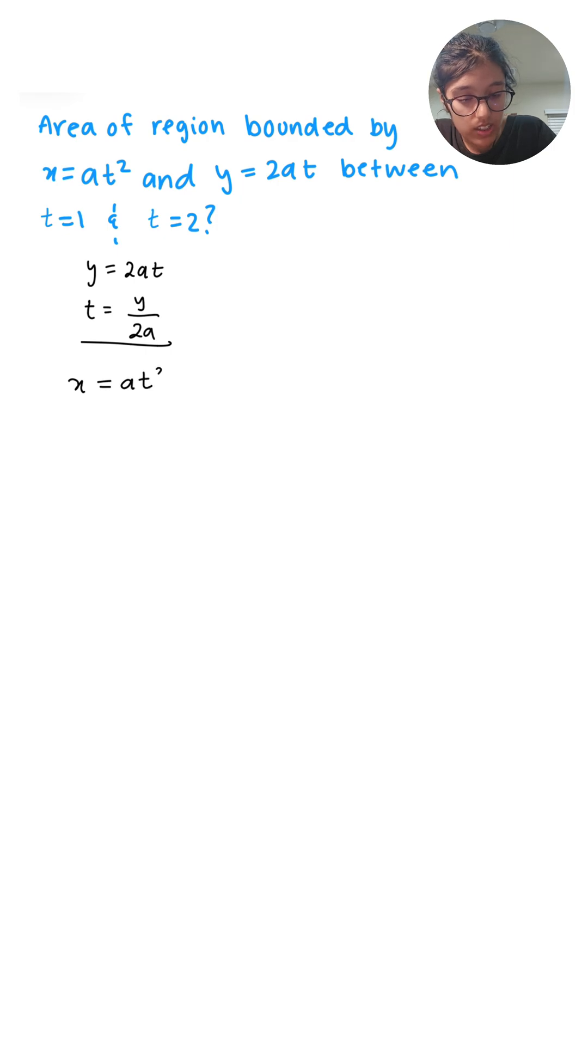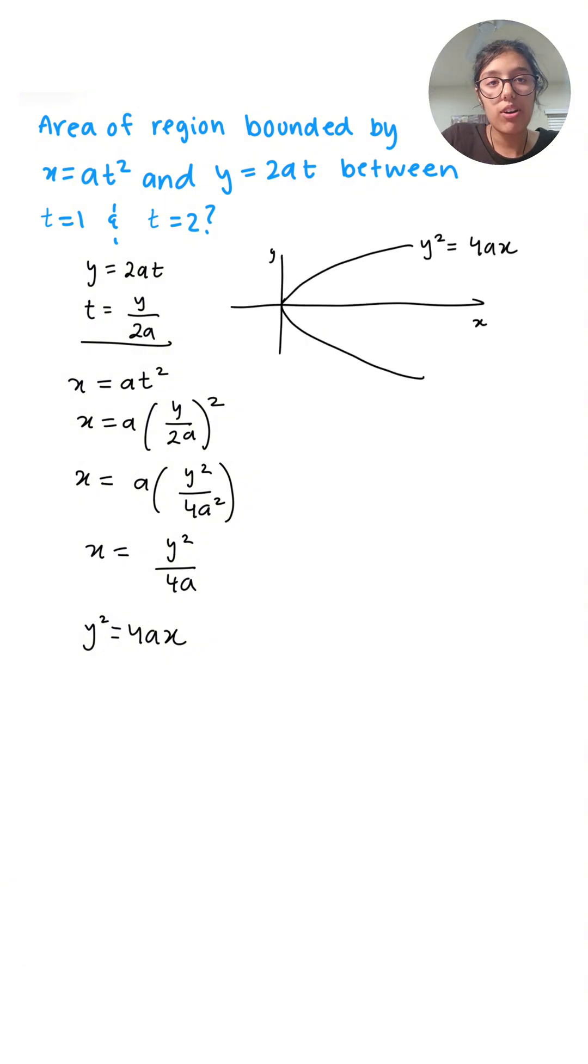So I have x = at², as in the question. I found that t = y/2a, and I just plug that in right here. Now I can start simplifying. Once we have simplified, I'm left with x = y²/4a. Once again, I like my equations in y equals something x, so I'm just going to say y² = 4ax. And I'm going to stop right there because I know that this is a sideways parabola. So this is how our parabola looks.